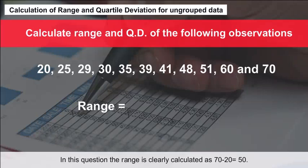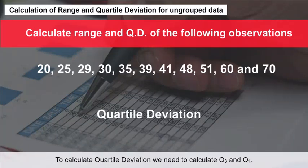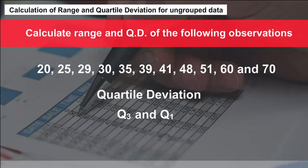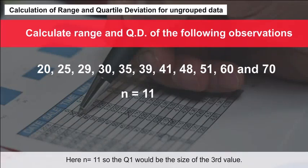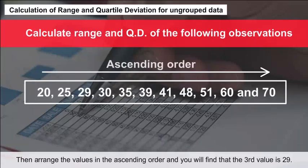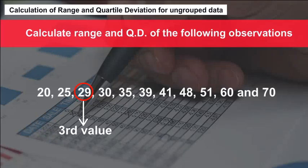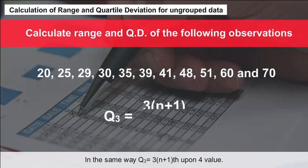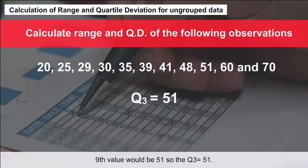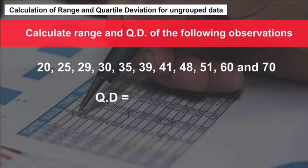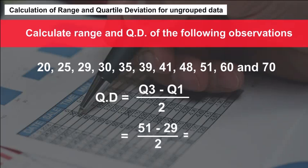The range is clearly calculated as 70 − 20 = 50. To calculate quartile deviation, we need Q3 and Q1. Q1 is the size of the (n+1)/4 th value. Here n = 11, so Q1 is the 3rd value, which is 29. Q3 = 3(n+1)/4 th value, which is the 9th value = 51. QD = (Q3 − Q1) / 2 = (51 − 29) / 2 = 11.